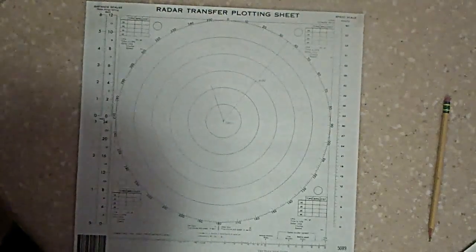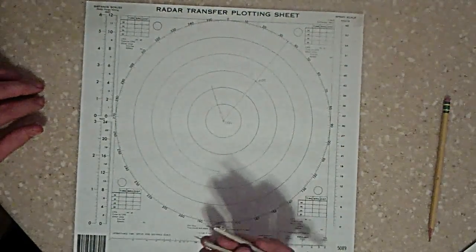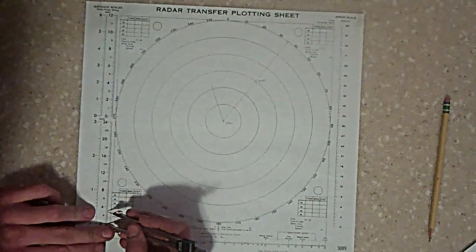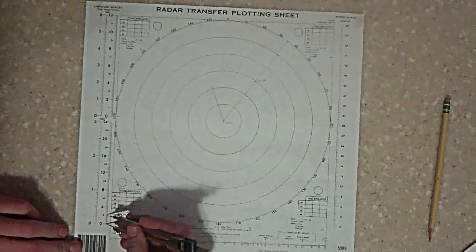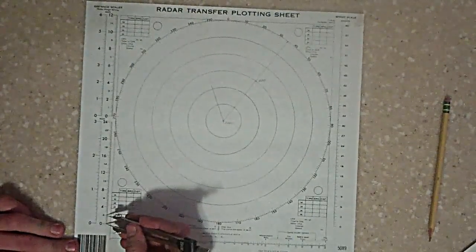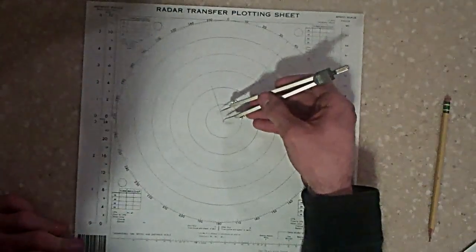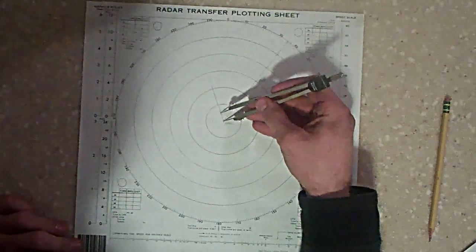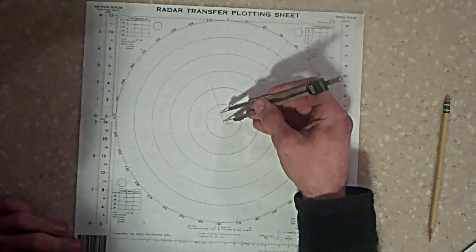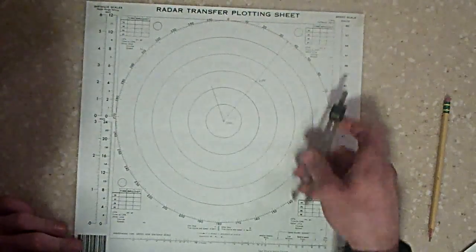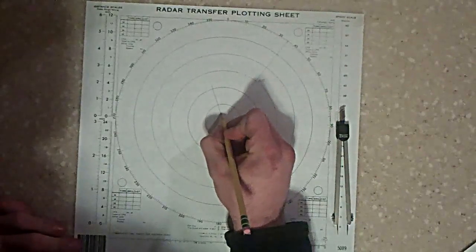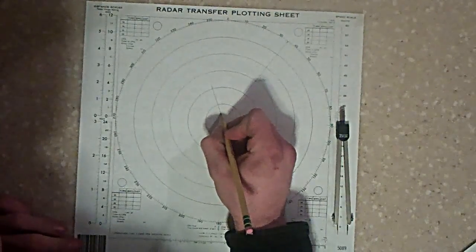Now, the current is traveling at 2 knots, so in one hour, you travel 2 nautical miles. So once again, mark out 2 nautical miles on your dividers. Apply them to your current line. This gives you your current vector.